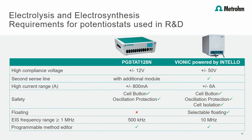To show how a suitable potentiostat is chosen for electrolysis and electrosynthesis experiments, I compare two instruments from our product portfolio: the PgStat128N with Vionic, according to their specifications. There are three main advantages of Vionic at first glance: plus/minus 50V compliance voltage, 6A maximum current, and a maximum frequency of 10 MHz, covering a wide range of applications. To conclude, Vionic fits much better to electrolysis and electrosynthesis applications than the PgStat128N.